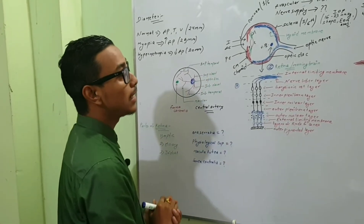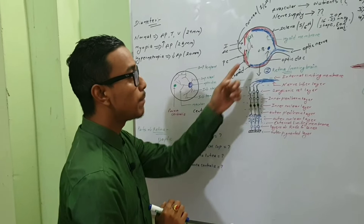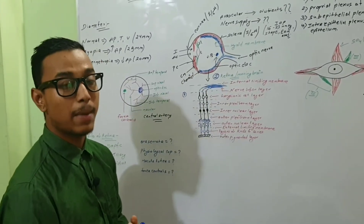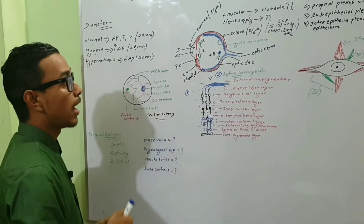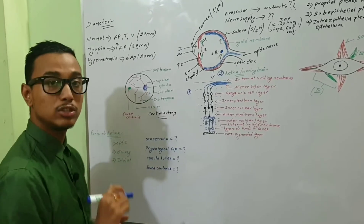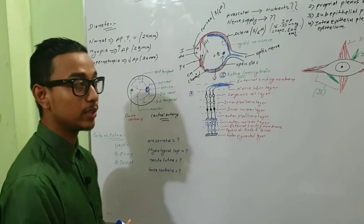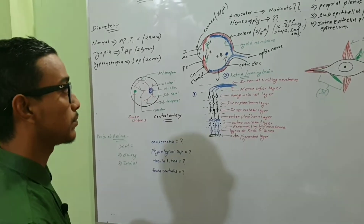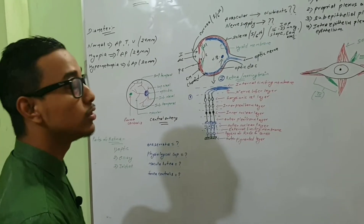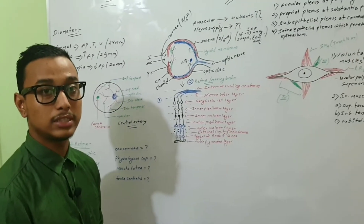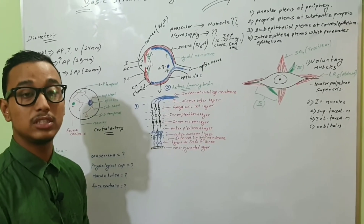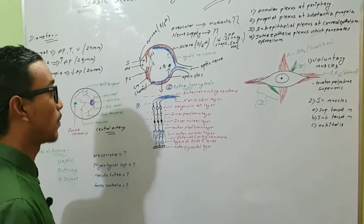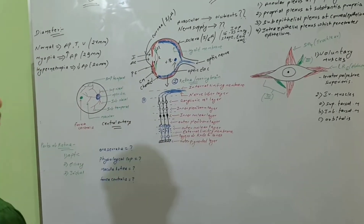Three millimeters lateral to the optic disc there is another depression known as the macula lutea, and central to the macula lutea there is a further depression known as the fovea centralis. The macula lutea consists of only cone cells, which are responsible for photopic vision or color vision.